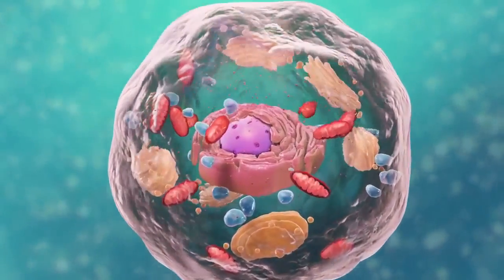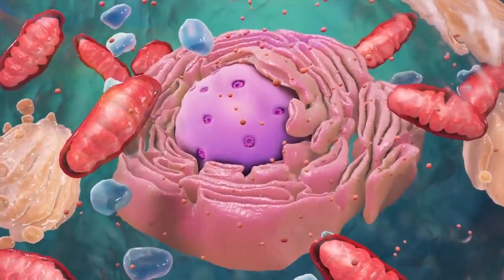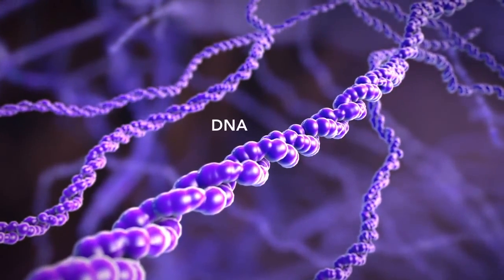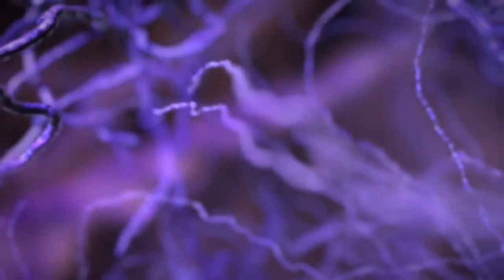Let's start with the nucleus, the control center of the cell. The nucleus contains DNA or genetic material. DNA dictates what the cell is going to do and how it's going to do it.